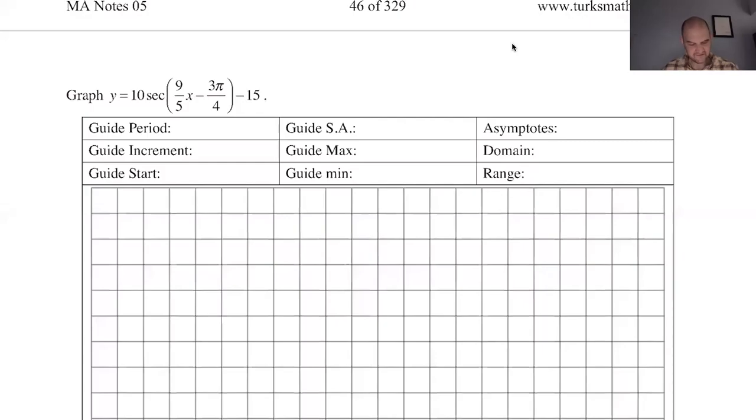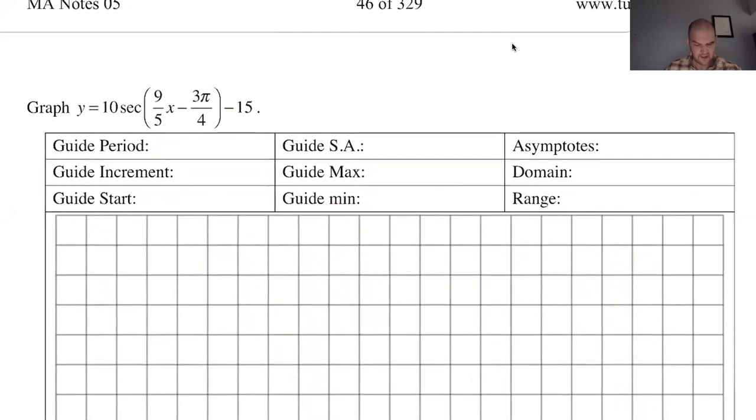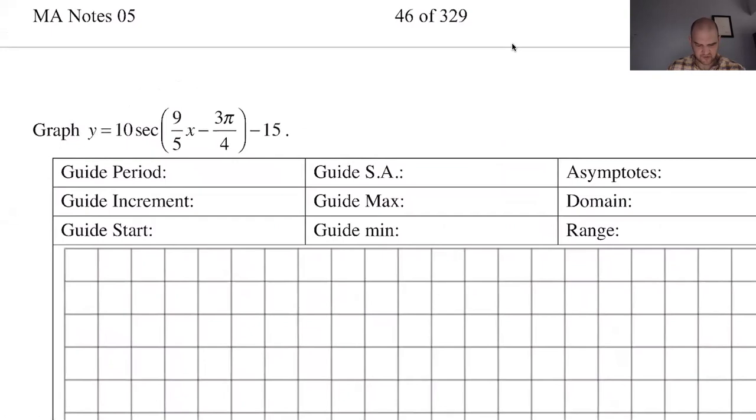All right, we're on page 47 of math analysis. We're in notes 5, graphing secant and cosecant. Really what we're doing is graphing sine and cosine. So let's get started. What I'm going to do in this one is I don't usually write the entire guide function. I just write cosine above this. So we're using cosine as our guide. It's going to be 10 cosine, all that stuff, and then minus 15. Everything stays the same, but secant changes to cosine.